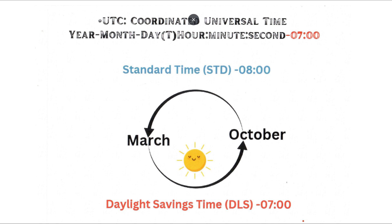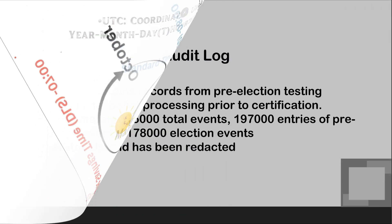The next slide shows the Coordinated Universal Time diagram, illustrating standard time as minus-08 offset from Universal Time and Daylight Savings Time as minus-07 hours. The audit log I examined contains records from pre-election testing — including logic and accuracy tests — through the final ballot processing prior to certification. We have around 375,000 events recorded in the audit log. About 197,000 entries are pre-election events, and about 178,000 are election-related.